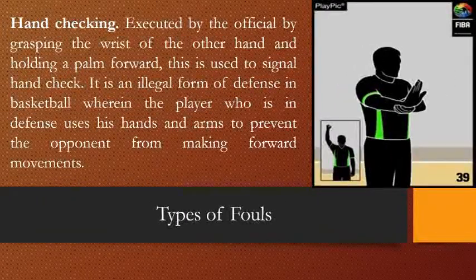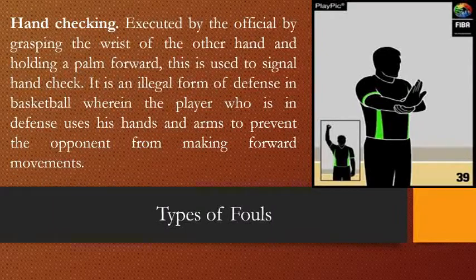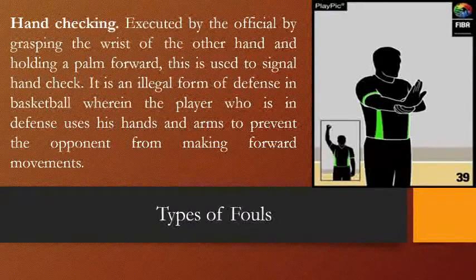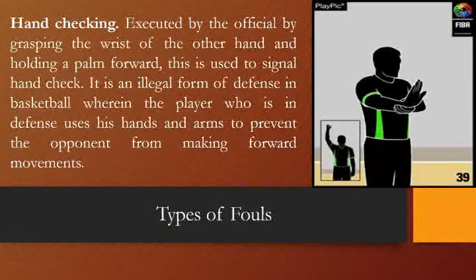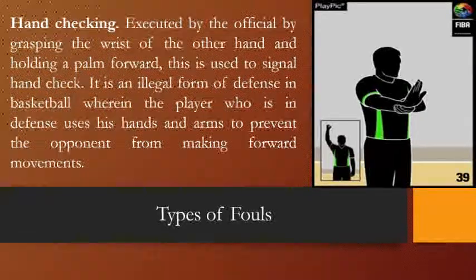Another type of foul is hand checking. Executed by the official grasping the wrist of the other hand while holding a palm forward. Hand checking is an illegal form of defense wherein the defensive player uses hands and arms to prevent the opponent from making forward movement. This is different from a holding or pushing foul — it involves placing your hands, for example behind the opponent's back, which remains for a few seconds, resulting in a hand checking call.